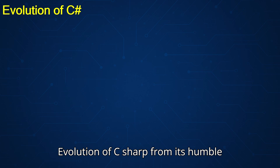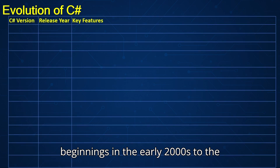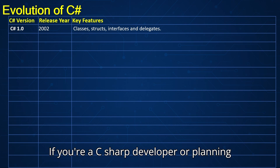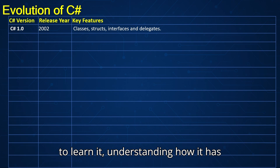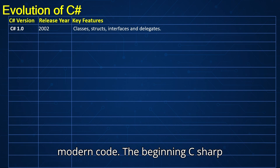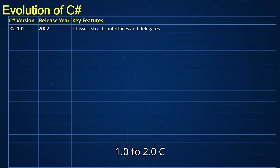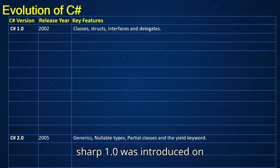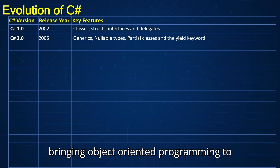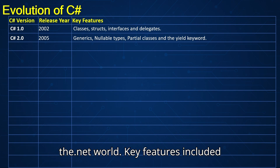Evolution of C-sharp: from its humble beginnings in the early 2000s to the feature-rich modern language it is today. If you're a C-sharp developer or planning to learn it, understanding how it has evolved will help you write better, more modern code. C-sharp 1.0 was introduced in 2002 — this was the foundation, bringing object-oriented programming to the .NET world.